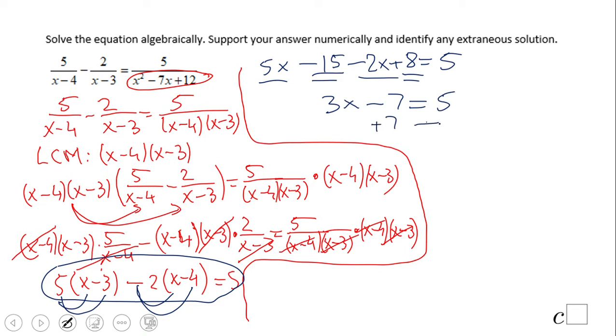We can add 7 on both sides and we get 3x equals 12. Divide by 3, we get x equals 4, which looks like a good solution.